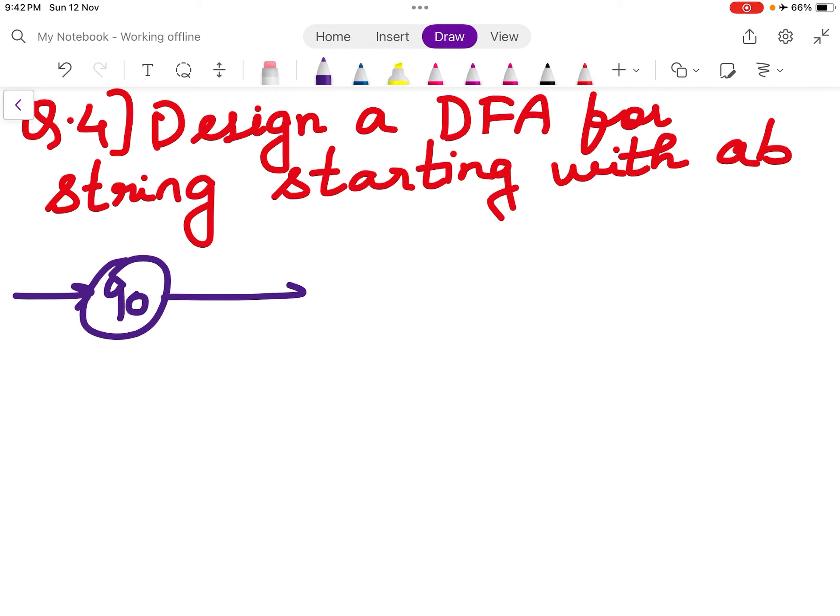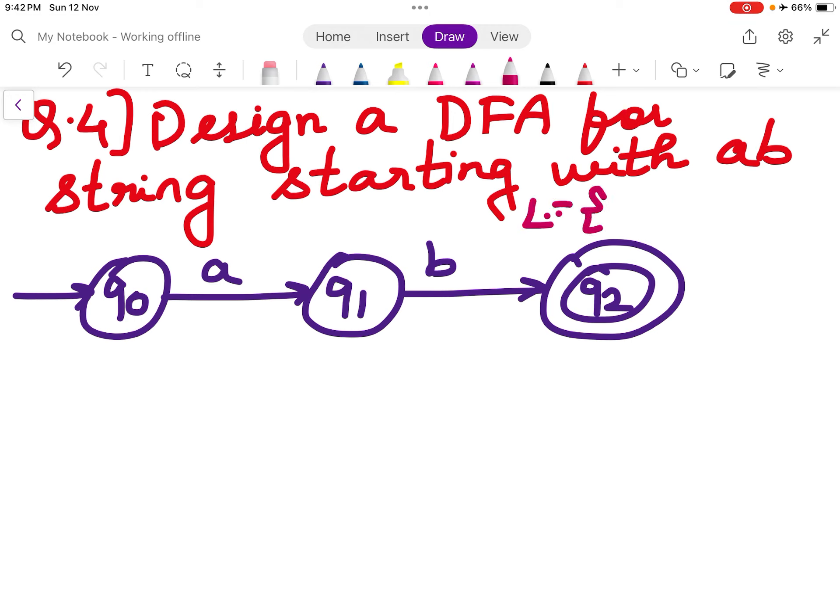First I will do Q0. Q0 on seeing an A will go to Q1. Q1 on seeing a B will go to Q2. Q2 will be my final state. My language will be simply AB.